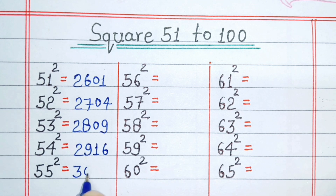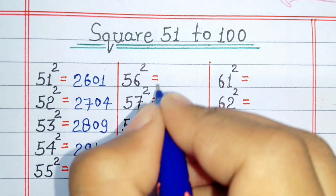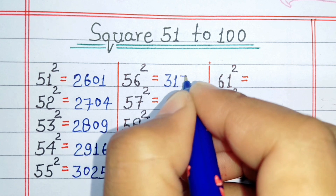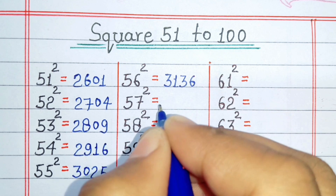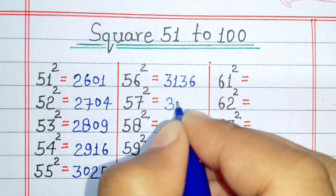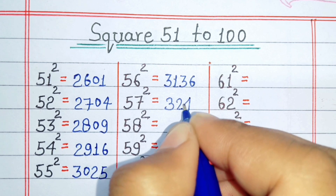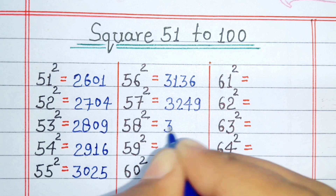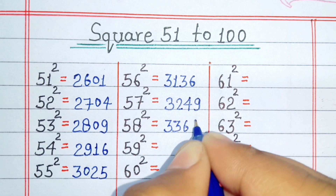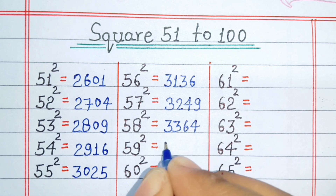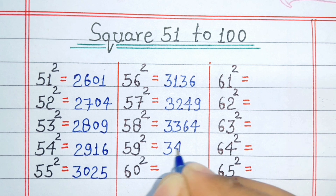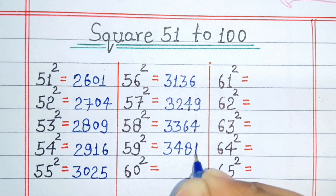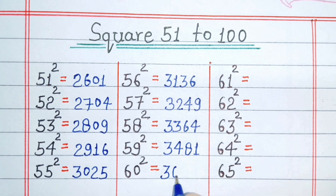Square of 55 is 3025. Square of 56 is 3136. Square of 57 is 3249. Square of 58 is 3364. Square of 59 is 3481. Square of 60 is 3600.